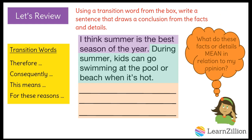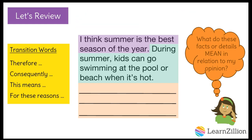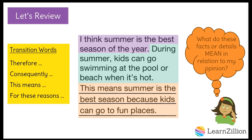Great job! To make the reason clearer and stronger, I thought about what my facts or details mean in relation to my opinion. If kids can go swimming at the pool or beach, then that means kids can go to fun places. So using one of my transition words, I wrote: "This means summer is the best season because kids can go to fun places."